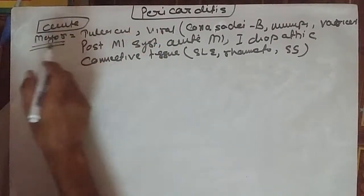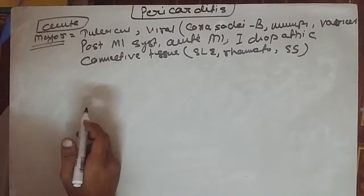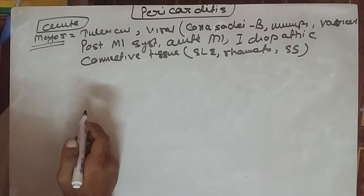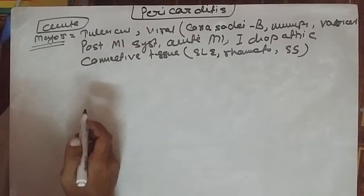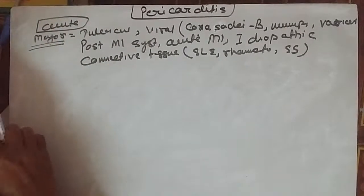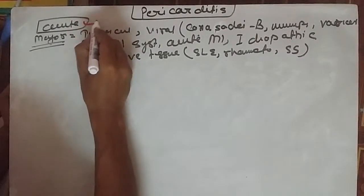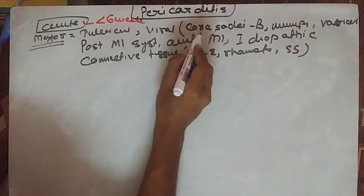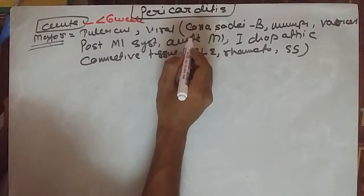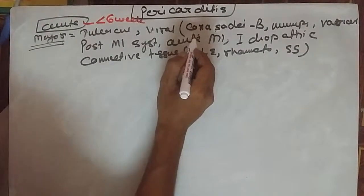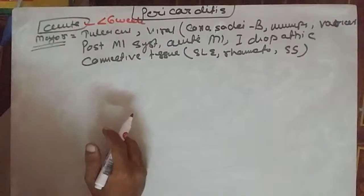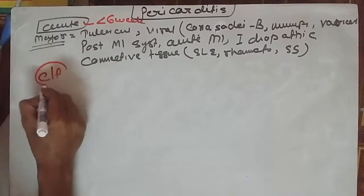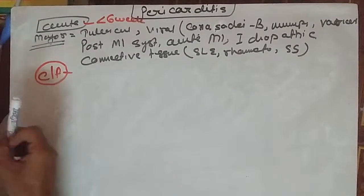The acute onset of pericarditis is usually less than six weeks. Between six weeks to six months it's called subacute pericarditis, and more than six months is chronic pericarditis.